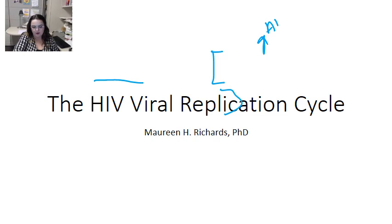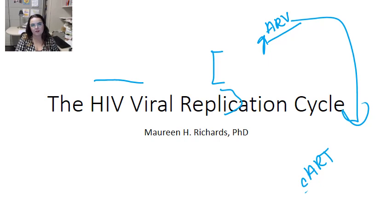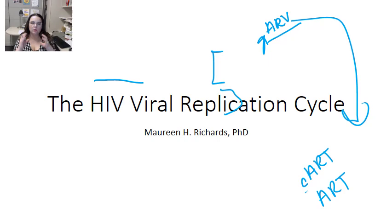There are a whole bunch of antiretroviral therapy drugs that patients go on — antiretroviral therapy, sometimes referred to as CART, which is combined antiretroviral therapy, or ART, or antiretrovirals. There are all sorts of different acronyms, but really what it means is that you have a cocktail of drugs working together at different stages in the virus's life cycle to inhibit its effectiveness.